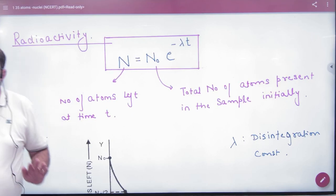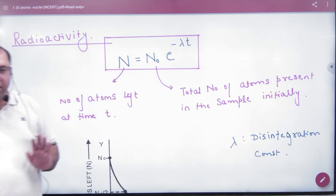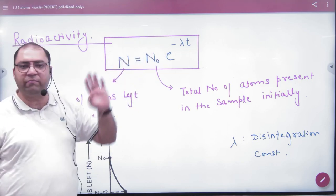So what have we done in radioactivity? I have written formulas. The first formula is number of atoms left in the sample at any time t is N₀ e to the power minus lambda t.